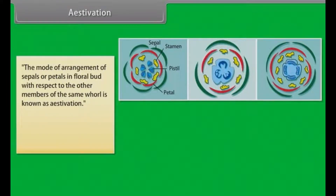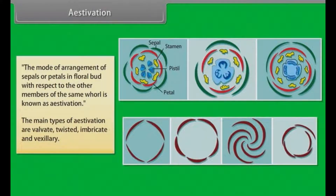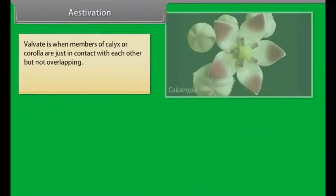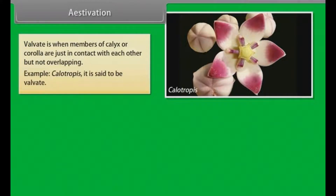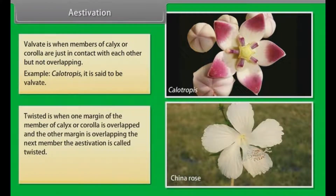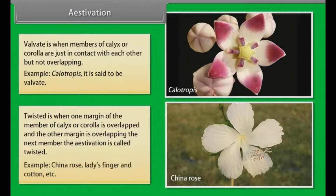Estivation. The mode of arrangement of sepals or petals in a floral bud with respect to the other members of the same whorl is known as estivation. The main types of estivation are: Valvate, Twisted, Imbricate and Vexillary. Valvate is when members of calyx or corolla are just in contact with each other but not overlapping; example, Calotropis. Twisted is when one margin of the member of calyx or corolla is overlapped and the other margin is overlapping the next member; example, China rose, Lady's finger and Cotton.